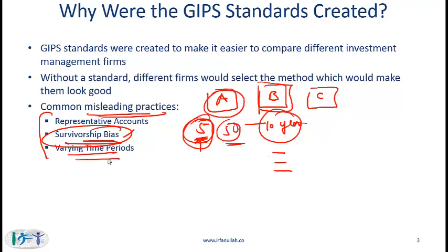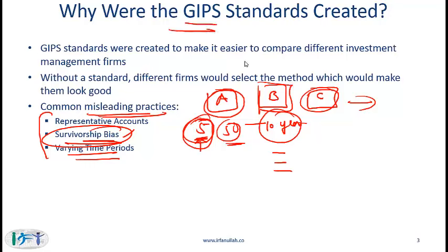Finally, varying time periods: if firm C had excellent returns over the last three years but poor returns before that, it might only present numbers for the last three years. There are many different ways of misleading readers of performance information, which is why there was a clear need for a set of standards for reporting performance — and that is the gap that GIPS helps fill.